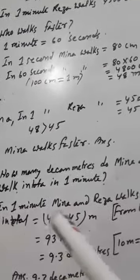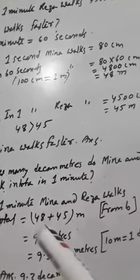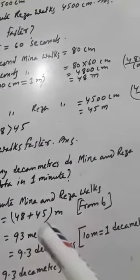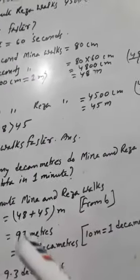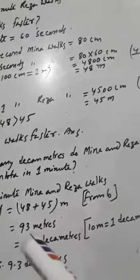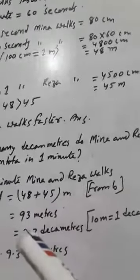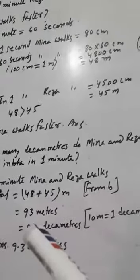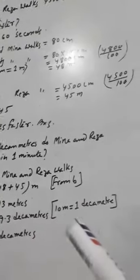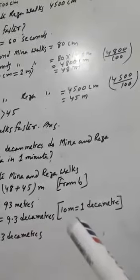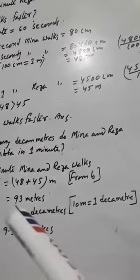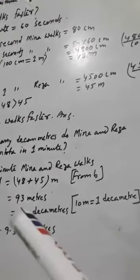In 1 minute, Meena works 48 meters and Raja works 45 meters. In total, if we add them, we get 93 meters. We have to convert 93 meters into decametres. 10 meters equals 1 decametre, so we divide 93 by 10.